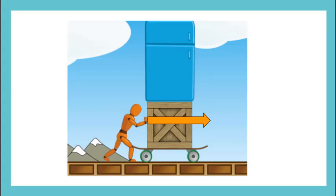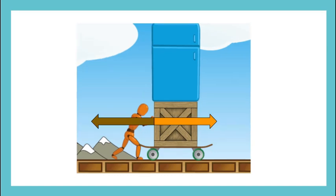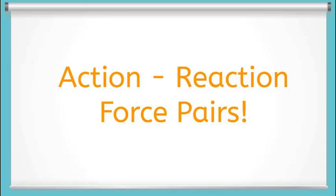We often think that forces happen to an object. When I push against a heavy box, I'm exerting a force onto the box. But the box is also exerting a force onto me, and this is because forces come in pairs, called action-reaction force pairs.